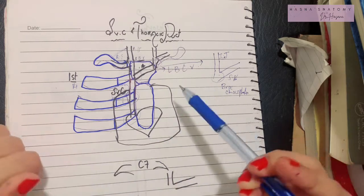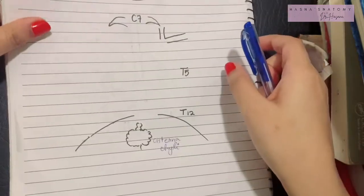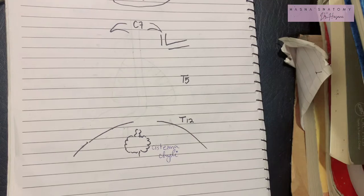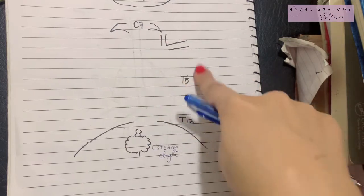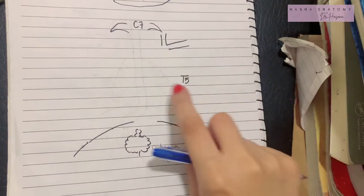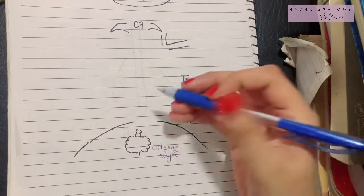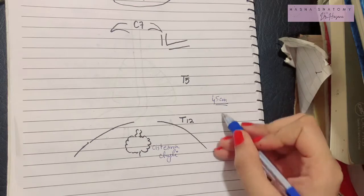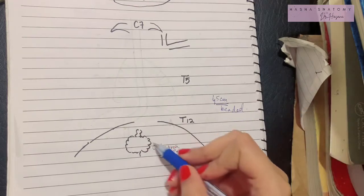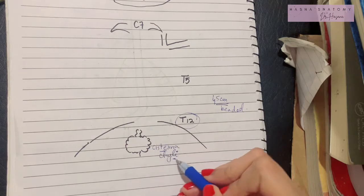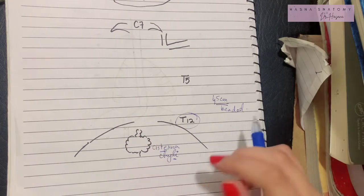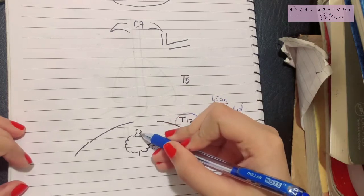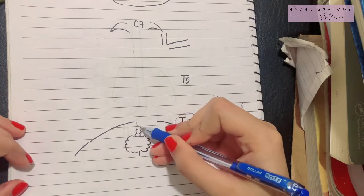Now let's talk about the thoracic duct. The thoracic duct is the major lymphatic channel of the body; it drains both right and left halves of your abdomen and only the left half of your thorax. It is a 45-centimeter-long tube, beaded in appearance, and it begins at the level of T12 vertebra from the cisterna chyli. The cisterna chyli is a lymphatic organ of the abdomen that collects lymphatic fluid from the intestines, and it gives origin to the thoracic duct.